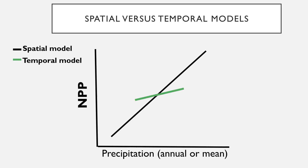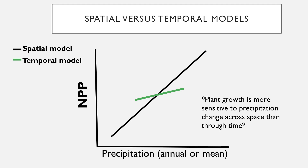We call that the temporal model. This sets up two relatively discrete models ecologists have utilized to forecast how sensitive primary productivity is to changes in precipitation: the spatial model and the temporal model. As you can see, the spatial model line is far more steep than the temporal model. Ecologists have interpreted this as plant growth in general being more sensitive to changes in precipitation across space than through time.